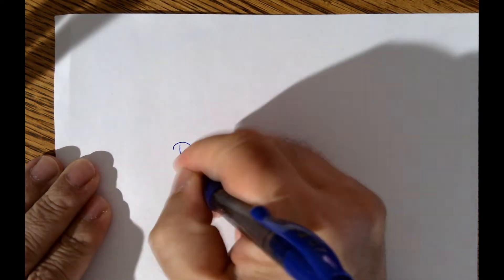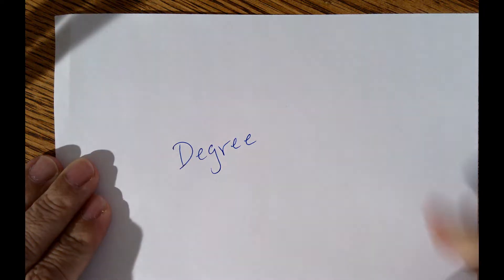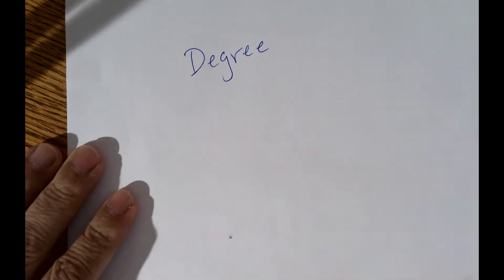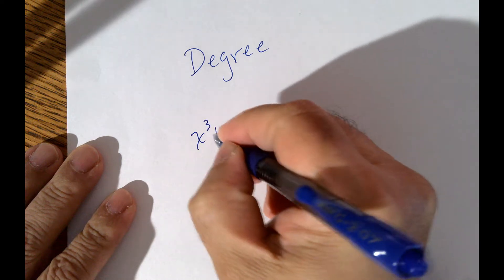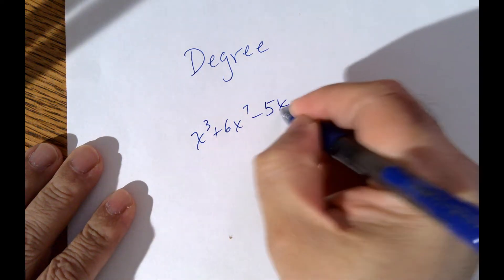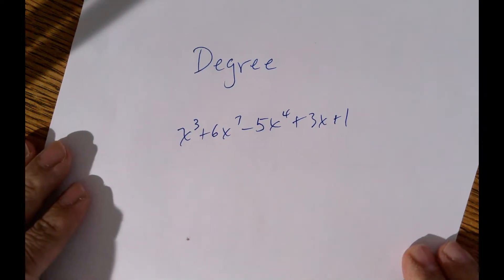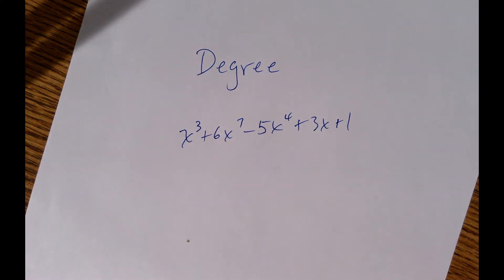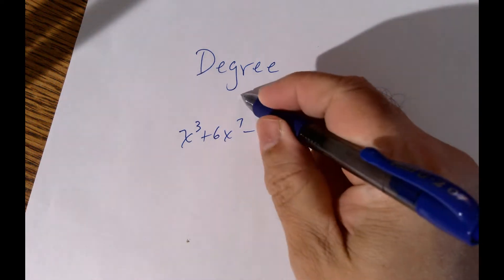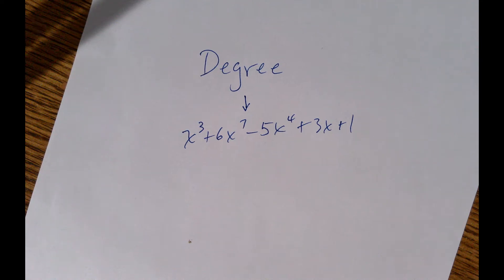This video is about analyzing the graphs of polynomials. We start by reviewing what a degree is. For example, given x cubed plus 6x to the 7th minus 5x to the 4th plus 3x plus 1, what is the degree of this polynomial? If you said 3, that would be incorrect.